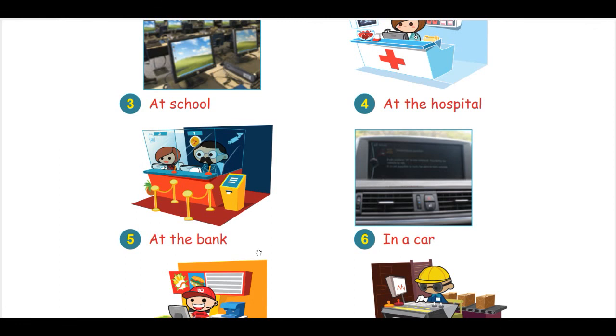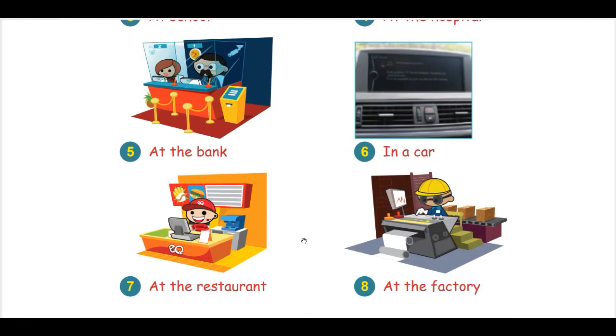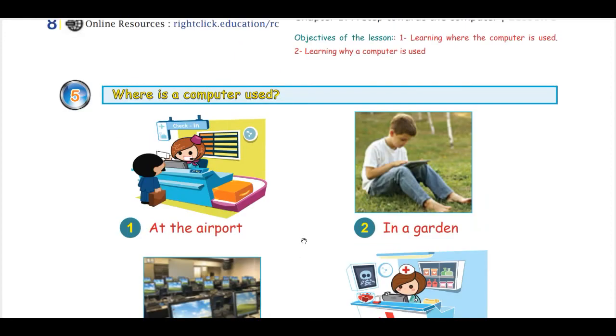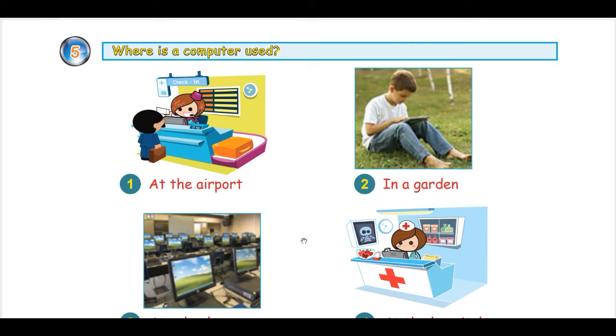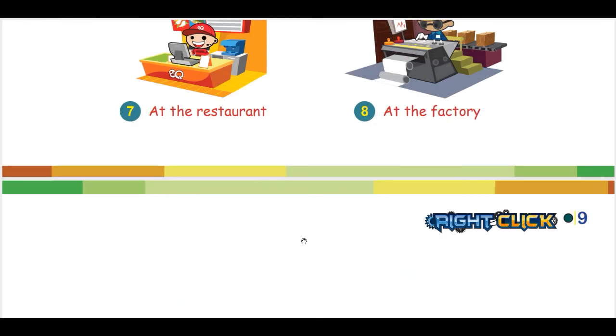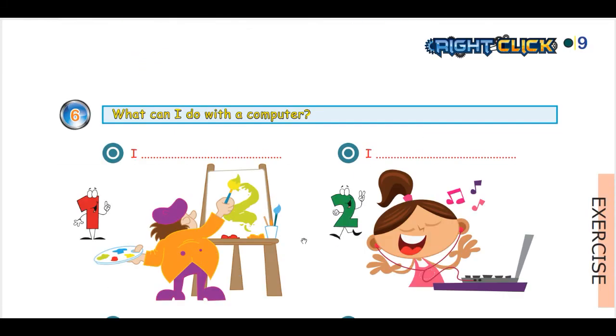At a bank, in a car, in a restaurant, maybe in a factory, and so on. It's really important to understand why the computer is used in such places, and then after this discussion you will move to the second page.